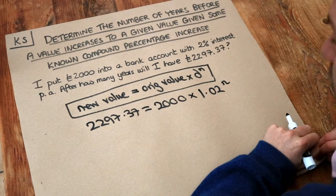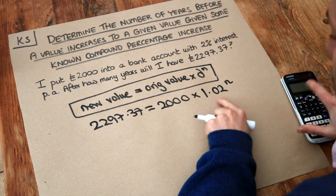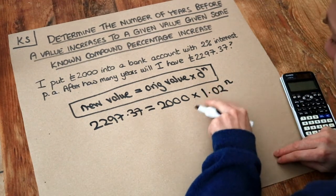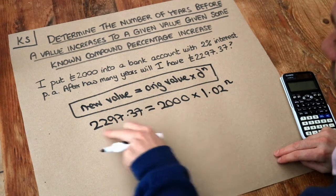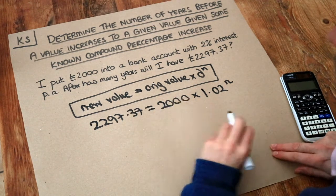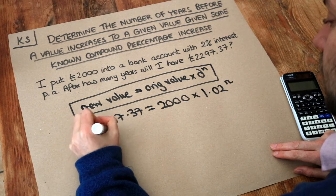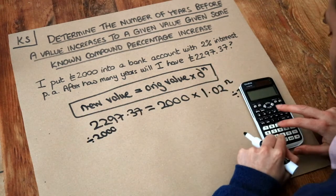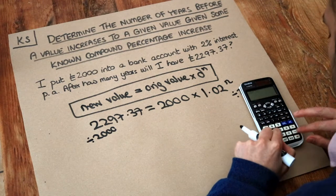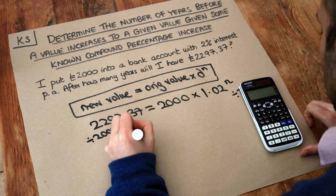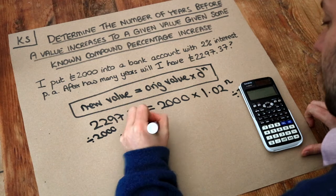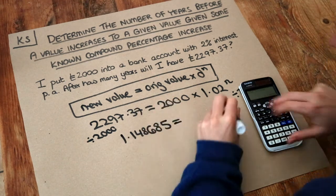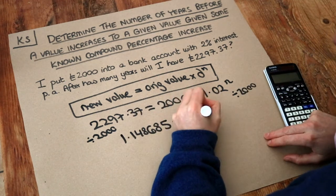And then we could just solve this equation. Well, let's think. This whole thing here has been multiplied by 2,000 to get 2,297. So let's just divide both sides by 2,000. And that means the left-hand side is going to become 1.148685, and the right-hand side, we've just got the 1.02 to the power of n.